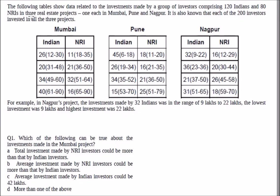In this set, the following tables show data related to investments made by a group of investors comprising 120 Indians and 80 NRIs in three real estate projects, one each in Mumbai, Pune, and Nagpur. Each of the 200 investors invested in all three projects.